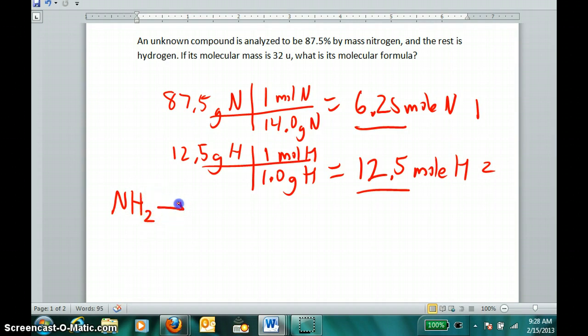I can use that empirical formula to get the empirical mass: 14 plus 2 gives me 16 atomic mass units. I know that the molecular mass, which was given in the problem, is a whole number multiple, and that multiple clearly is 2, meaning we have twice as many atoms. N2H4 is my molecular formula.